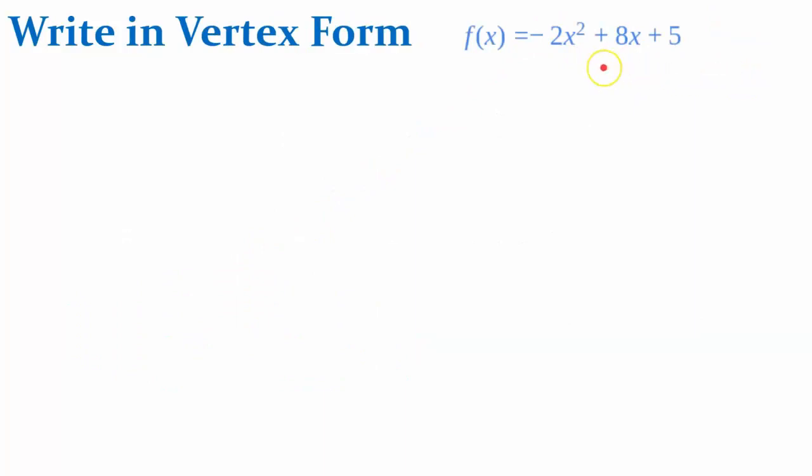Likewise, you can take a function that's written in standard form and write it in vertex form. To do this, you would first want to find the axis of symmetry using the formula x equals negative b divided by 2a, giving me an axis of symmetry of x equals 2.